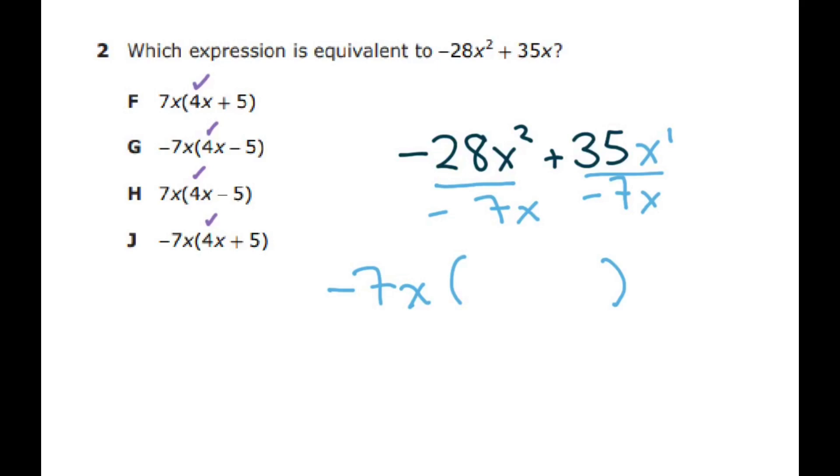So 28 divided by 7 is 4, x squared divided by x is just x. Then a positive divided by negative is negative, and these x's cancel, that equals one. So you're just going to get 35 divided by 7 is 5. So your final answer would be answer G.